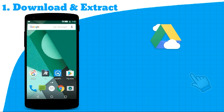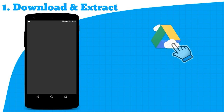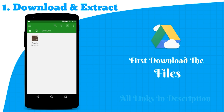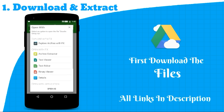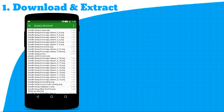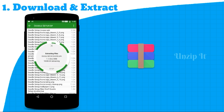First of all, let's start with the simple thing — download all the files, which is only 1 zip file. You can download the file from the description box. They will not be gone or disappear from the description. And extract it using any zip app or any decent file explorer.